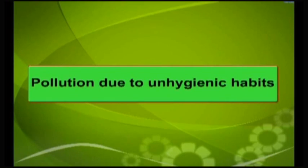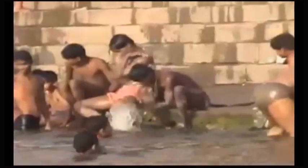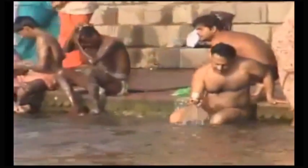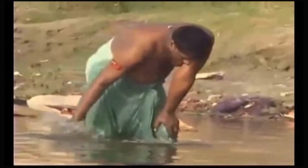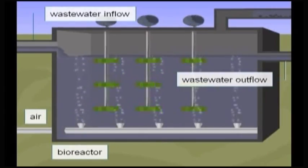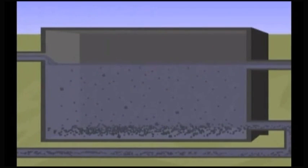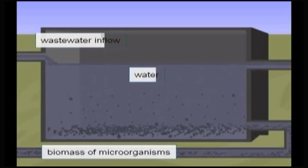Yet another type of water pollution is due to the unhygienic habits of human community. Washing of domestic animals and taking bath in rivers, lakes, etc. also pollutes the water bodies and contaminates them with parasites and other unwanted organisms. In towns and cities, the sewage water from homes is collected by the municipal sewage system and this water is released into rivers. This contaminates and pollutes the water with inorganic, organic and biological pollutants and makes it unfit for human use.